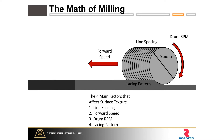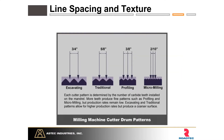From there we'll jump into drum configurations: line spacings, tooth spacings, drum RPM, and lacing patterns. These are interrelated and affect our milled surface. This diagram from an old Aztec technical publication shows different tooth spacings and what surface to expect. A three-quarter inch spacing is more of a reclaimer/stabilizer drum, not typically seen on milling machines. A five-eighths inch spacing is the industry standard — far and away the most common spacing seen in the field.